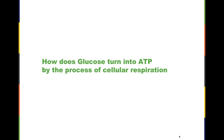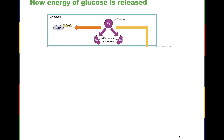Let's look at an overview of how glucose is turned into ATP by the process of cellular respiration. Cellular respiration is made up of many different steps, so I'm going to go one by one through these different stages of cellular respiration.